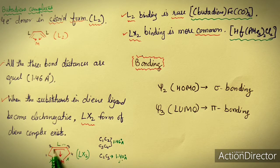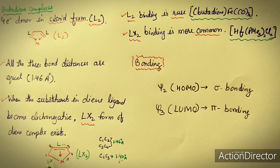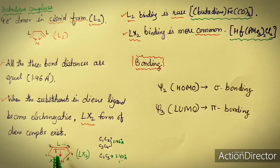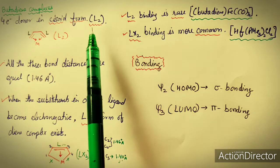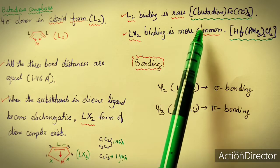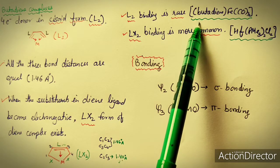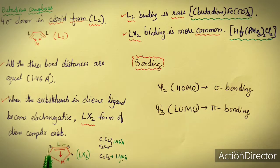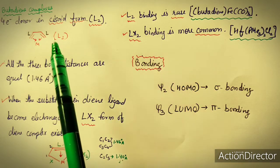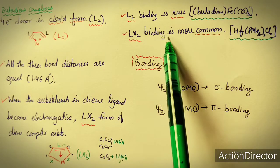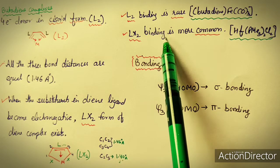In LX2 binding, the central double bond contributes two electrons and the terminal carbons each donate one electron, making the butadiene a four electron donor total. Generally, L2 binding is rare; LX2 binding is more common in butadiene complexes, and again the ligand is a four electron donor in both cases.